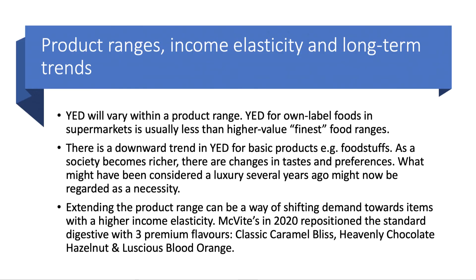Keep in mind, when you discuss income elasticity, that we have something called product ranges. The income elasticity of demand for a product will vary according to the range of products. Own-label foods typically have a lower income elasticity than the higher-priced, higher-value 'finest' or 'taste the difference' ranges. There's a downward trend in income elasticity for basic products. As society becomes richer over time, our tastes and preferences change — what we'd regard as a luxury a generation ago the current generation may regard as a necessity. Businesses use product range as a way of shifting demand towards items with higher income elasticity. A good example is the biscuit sector — McVitie's repositioned their core digestive product with new premium flavours, appealing to customers with that little extra spending power because those premium flavours carried a premium price.